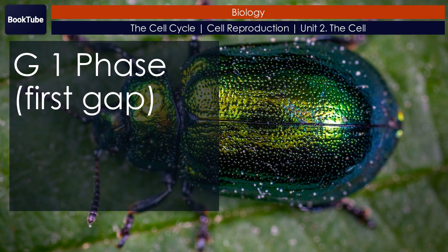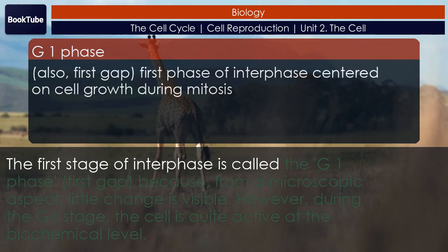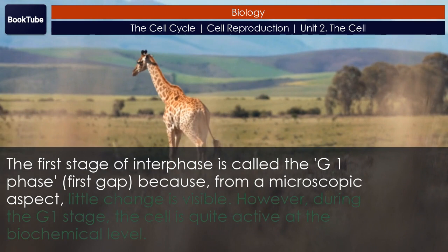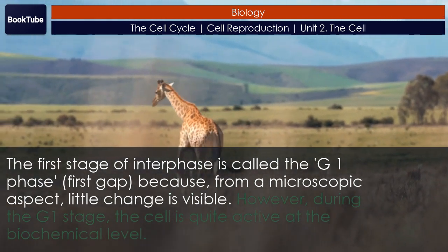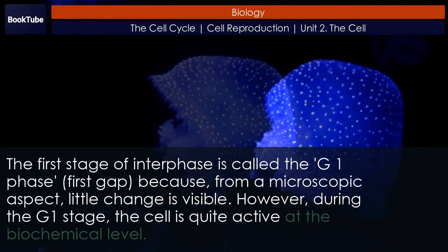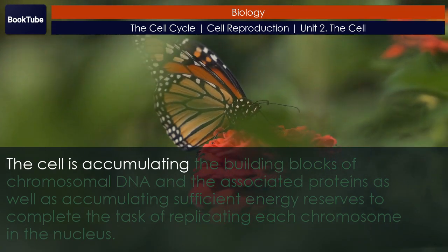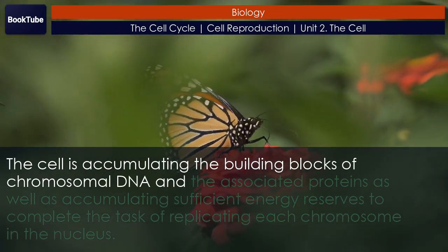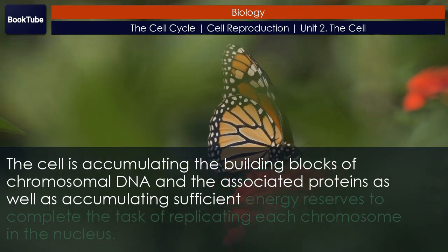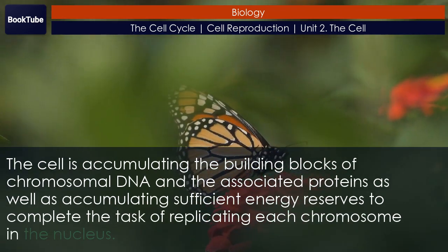G1 phase — First gap. The first stage of interphase is called the G1 phase, or first gap, because from a microscopic aspect, little change is visible. However, during the G1 stage, the cell is quite active at the biochemical level. The cell is accumulating the building blocks of chromosomal DNA and the associated proteins, as well as accumulating sufficient energy reserves to complete the task of replicating each chromosome in the nucleus.